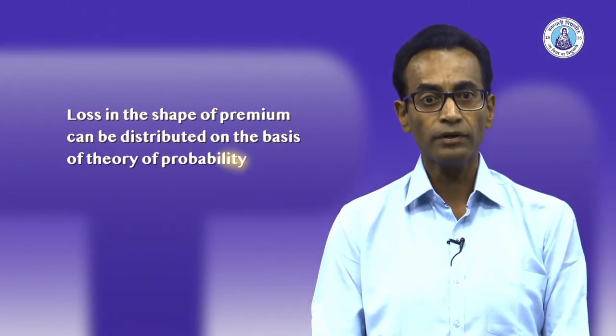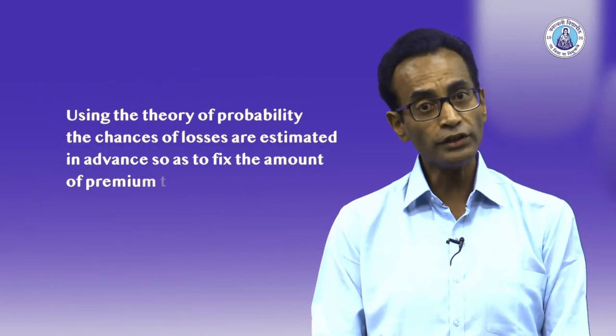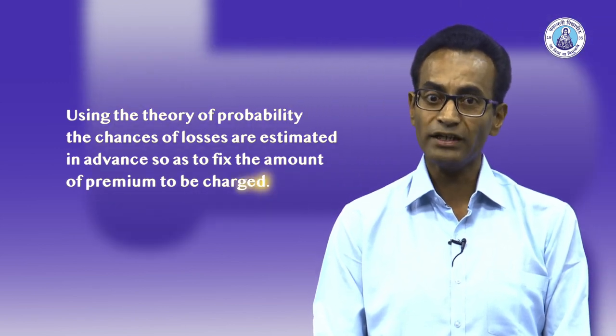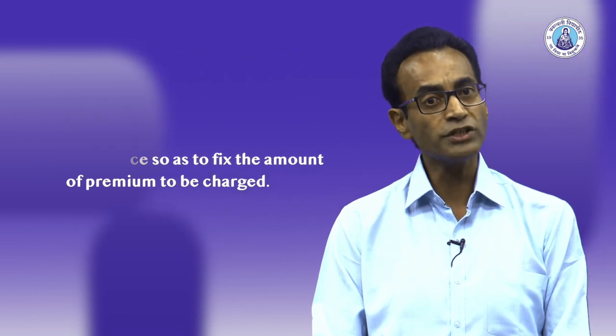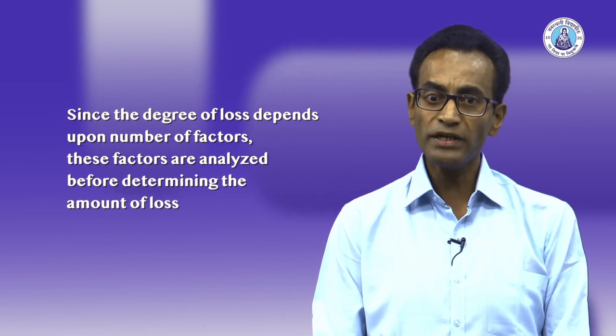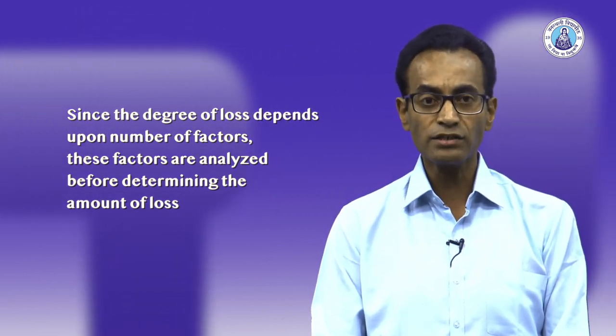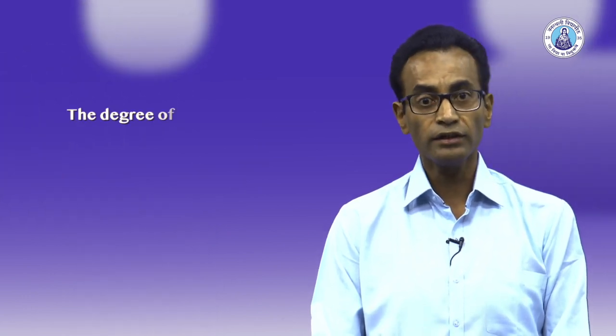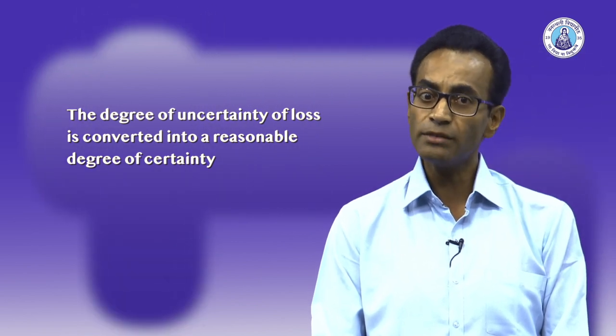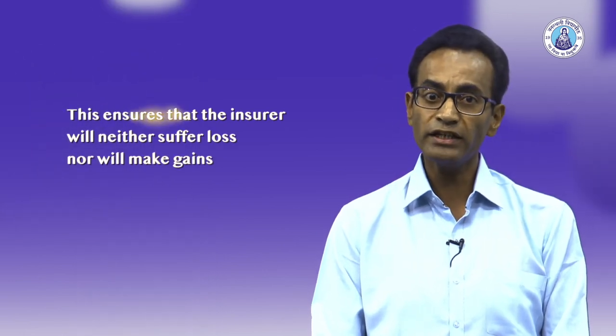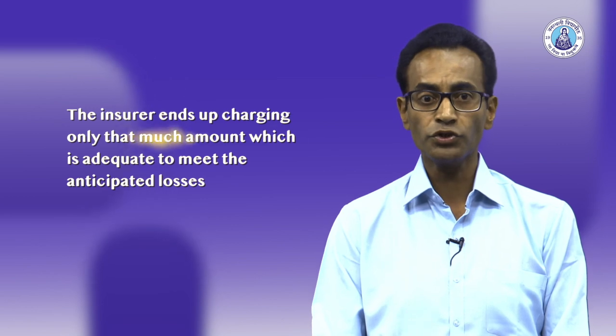The next principle is the principle of probability. The loss in the shape of premium can be distributed on the basis of the theory of probability. Using the theory of probability, the chances for losses are estimated in advance so as to fix the amount of premium to be charged. Since the degree of loss depends upon a number of factors, these factors are analyzed before determining the amount of loss. The degree of uncertainty of loss is converted into a reasonable degree of certainty. This ensures that the insurer will neither suffer loss nor make gains, charging only that much amount which is adequate to meet the anticipated losses.